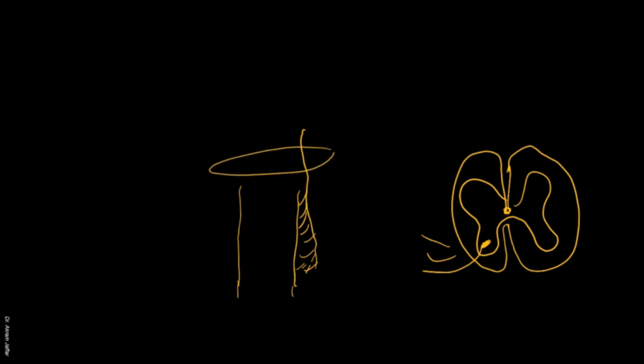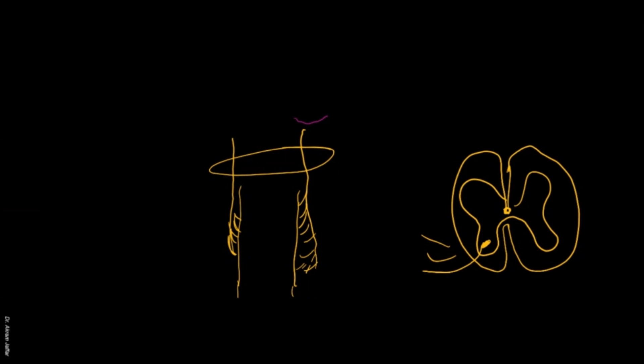They enter the cranial cavity through the foramen magnum. This is the spinal root of the accessory nerve. Then after that we have some fibers that join the spinal root of the accessory nerve, and they form the accessory nerve for a very short segment. The accessory is cranial nerve number 11.